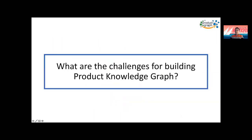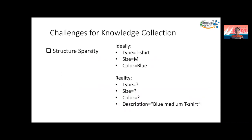So what exactly are the challenges? The first one is structured sparsity. Ideally, when you build a knowledge graph, you want to have those attributes and values from some structured data. But in reality, we don't. For many products, we just have descriptions, and you have to figure out what the type, size, and color is. So that's the first challenge.